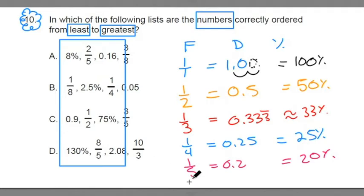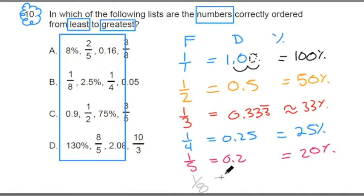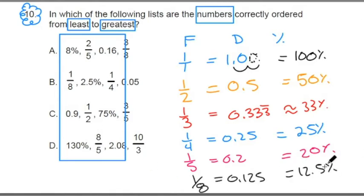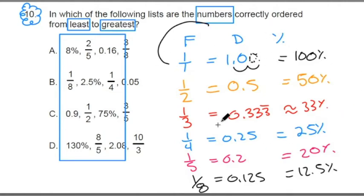Last but not least, one eighth — everyone's got to know this — is 0.125 or 12.5%. These are core fractions, decimals, and percents. It's really important that you memorize these numbers, seeing that one number can be represented as a fraction, as a decimal, and as a percent — all at the same time. So when someone says 50%, you see one half. Someone says one third, you're thinking 33%. Someone says one fourth, you think 0.25. Very important that you can interchange these.